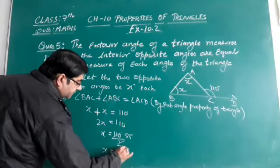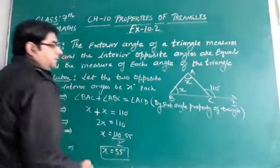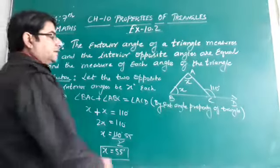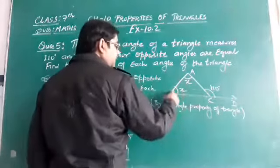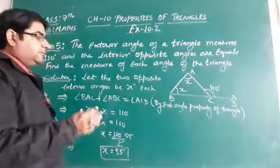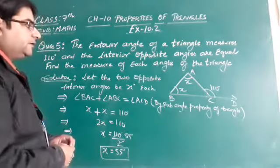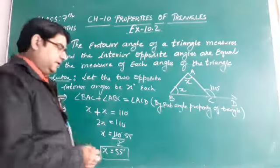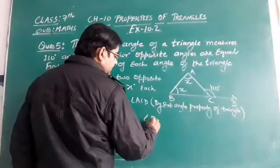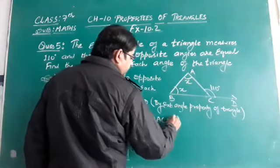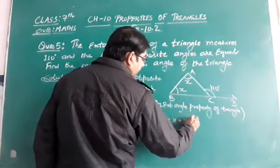That is the value of x. The measurement of both angles is 55 degrees. BAC is equal to x equal to 55 degrees.